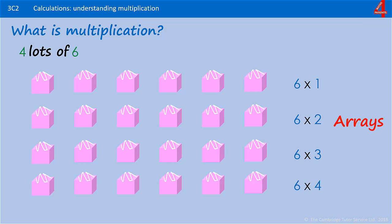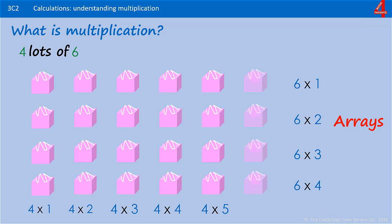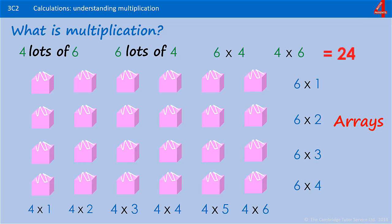We can also look at how many lots of 4 we have. Here's 1 column with 4 cakes — 4 times 1. Another column with 4 cakes — that's 4 times 2. A 3rd column with 4 cakes — 4 times 3. A 4th column — 4 times 4. A 5th column — that's 4 times 5. And a 6th column, so that is 6 lots of 4. It's the same array of cakes. We can call this 6 times 4 or 4 times 6. Whatever we call it, we have 24 cakes.